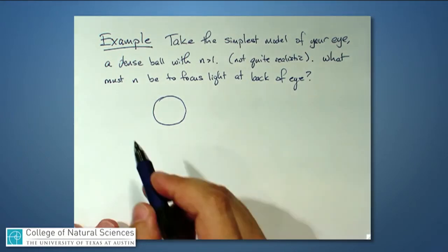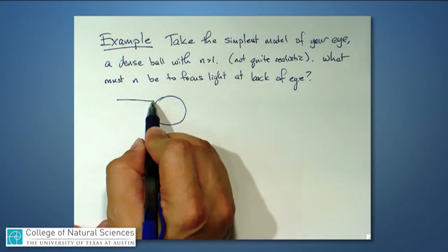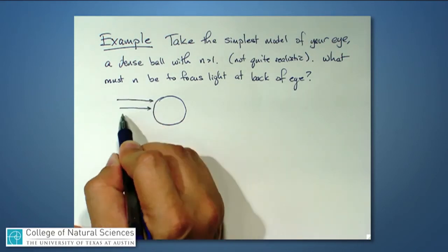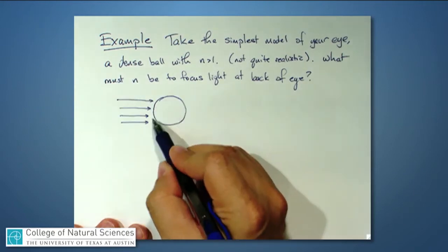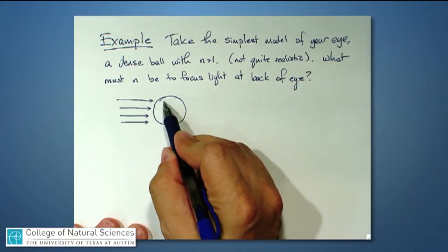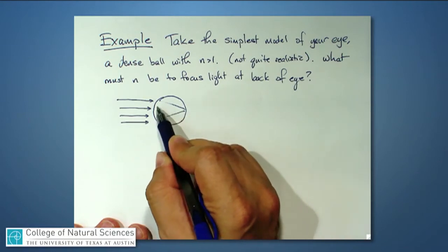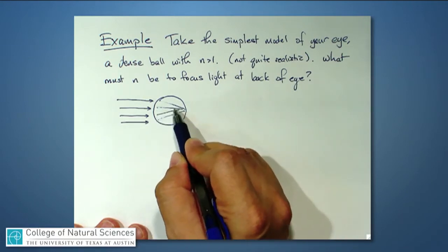So you probably know what does an eye do? It takes light that's coming in and because it has a curved surface here, it focuses that light to the back to form an image on what's known as the retina.